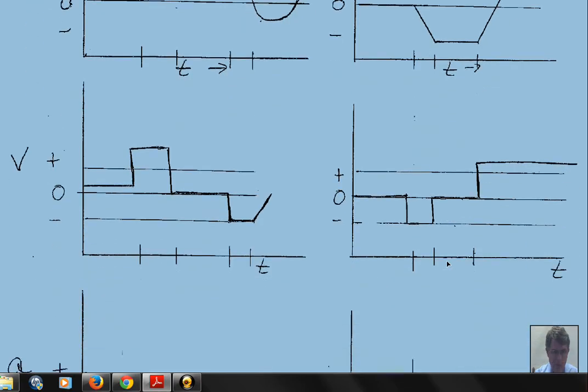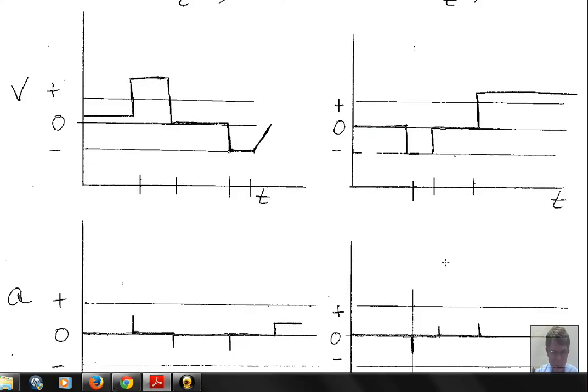Then the acceleration comes from looking at slopes on the velocity graph. So we have no slope here. The acceleration is zero. Then we have a little instantaneous burst of acceleration to bring us to this second velocity. So I have just a short little blip up here. But once we get into this time interval, the velocity is constant. So the acceleration is zero.